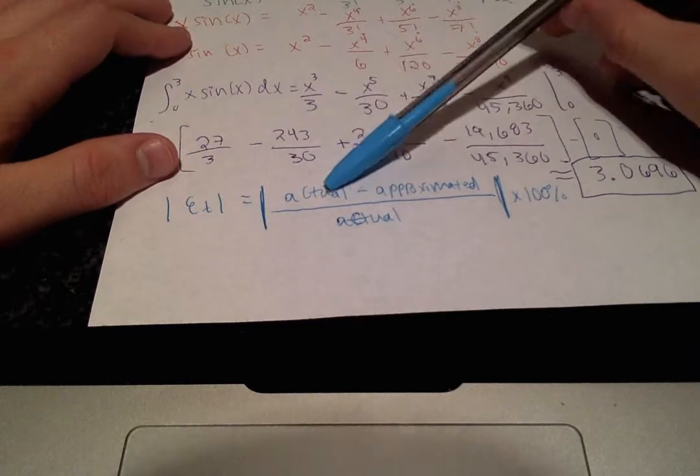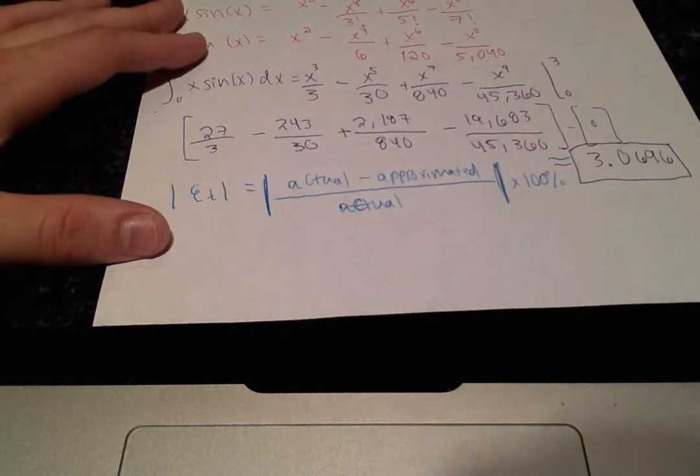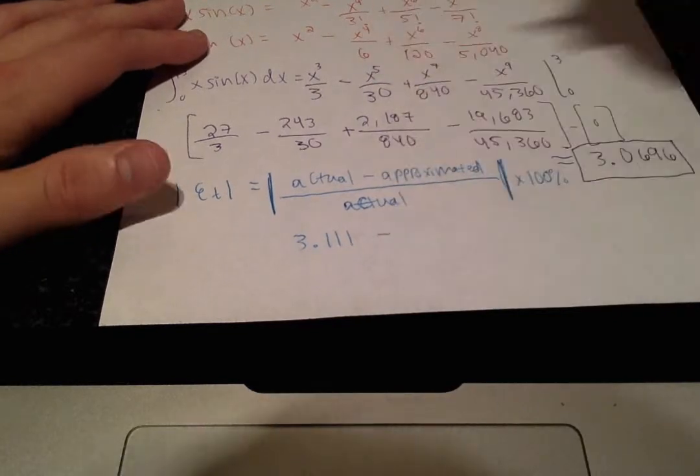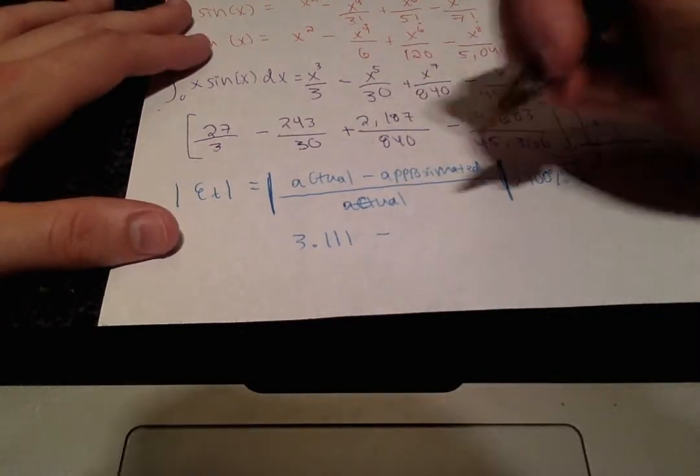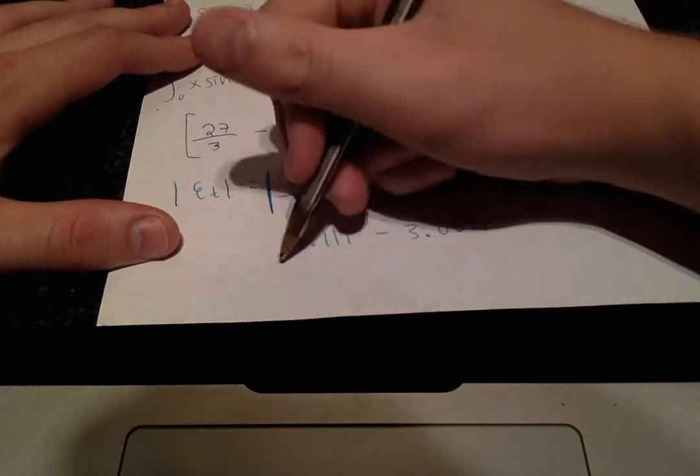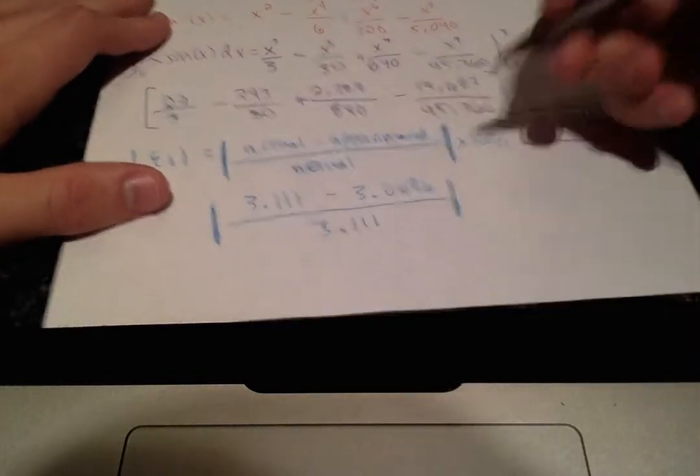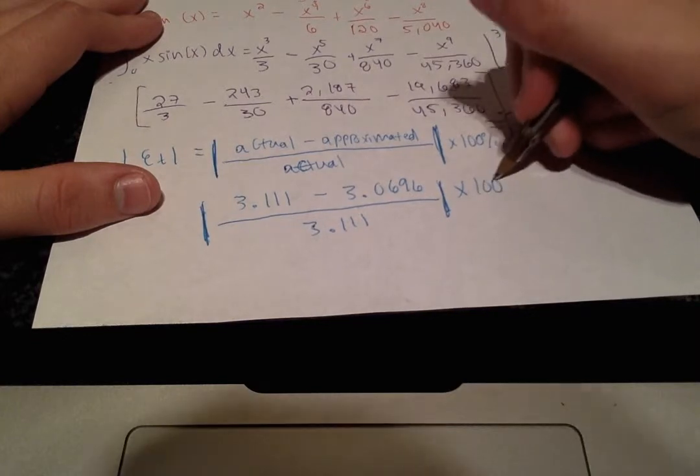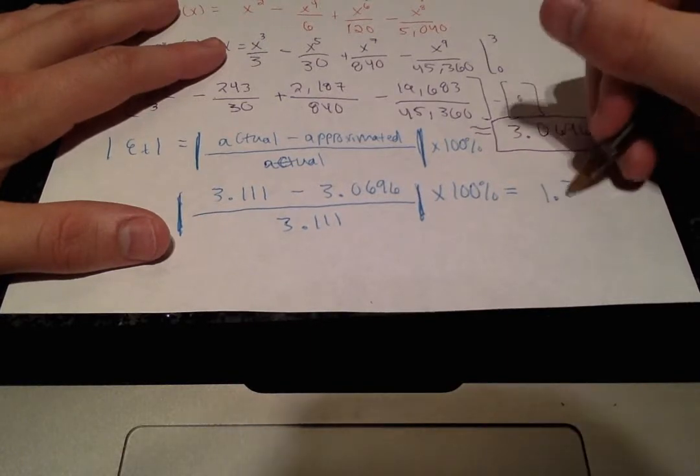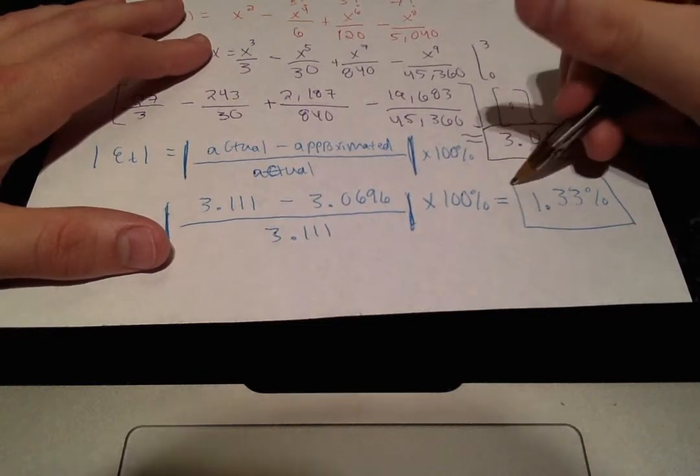Okay, so our actual value, you can get that from using a calculator, and that is 3.111. And our approximated value is the value that we just calculated, 3.0696 over our actual value, absolute value of all of this, times 100%. And I get 1.33% as our absolute relative true error.